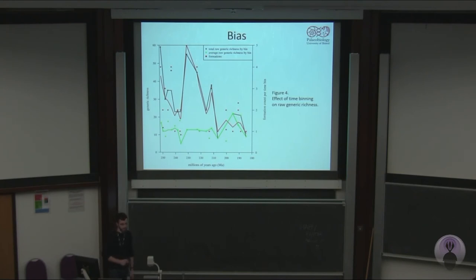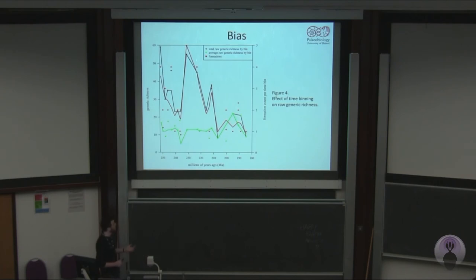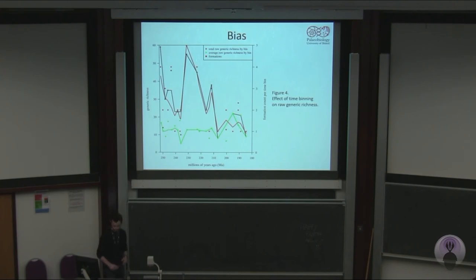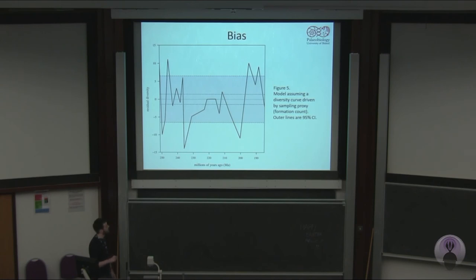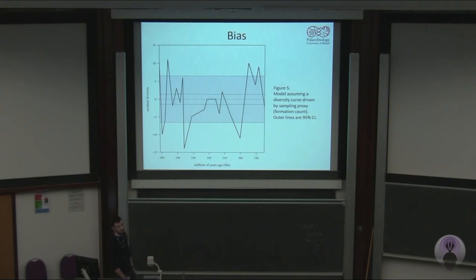To check whether this biases our results, we did two things. One was to look at the average rarefied richness through time — we rarefied each individual formation and then checked the average by time bin. The major events still occur, though there's potentially less of a diversity peak in the late Triassic compared to the early Triassic. We also used a method developed by Graham Lloyd: a modelled diversity curve that assumes your diversity curve is driven by sampling bias alone — in this case, formation counts — and removes it. Anything outside the grey confidence box we are fairly confident is not driven by sampling bias. Importantly, the end-Triassic extinction, the Carnian event, and the early Triassic recovery are all outside the box, so we're fairly confident these are real signals.